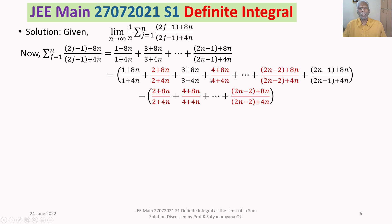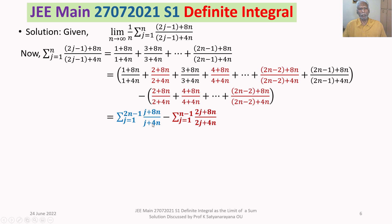We rewrite the first bracket using sigma notation: sigma from j=1 to 2n−1 of (j + 8n)/(j + 4n), which covers 2n−1 terms. The red terms form a second sigma: sigma from j=1 to n−1 of (2j + 8n)/(2j + 4n), which are n−1 terms in number.